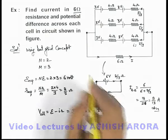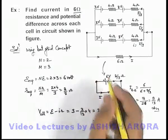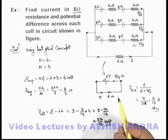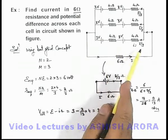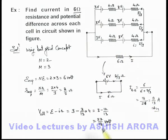That'll be the potential difference across each cell in the circuit, as all are connected in identical manner and all are supplying the same current I by 3, which is 3 by 13 ampere. So this'll be another answer to this problem.